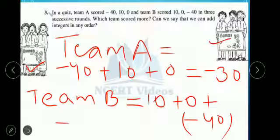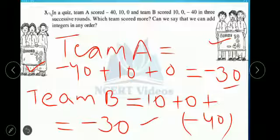You will get minus 30 again. Plus, minus, minus. What do you observe? Team A also scored minus 30. Team B also scored minus 30. It means both teams score are same.